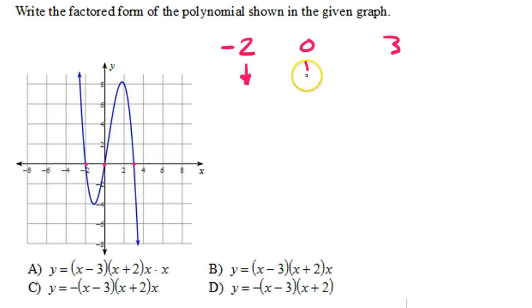Now, each of these can be turned into a factor. x equals negative 2 would come from a factor of x plus 2. Imagine setting this equal to 0 and solving. You would get negative 2.